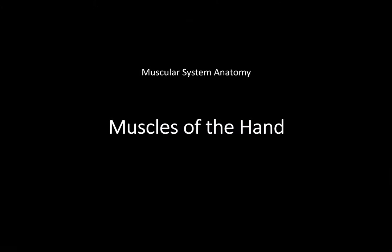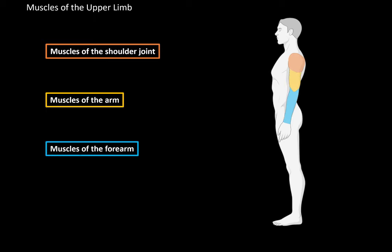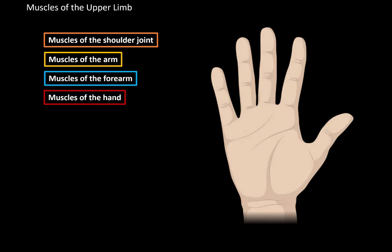What's up? Medite here. In this video, we will be covering the muscles of the hand. The muscles of the upper limb are divided into four parts according to their anatomical location: the muscles of the shoulder joints, the muscles of the arm, muscles of the forearm, and then the muscles of the hand — which is what we're going to focus on.